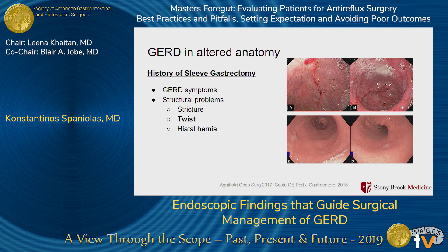A twist of the sleeve — whether anatomic or functional — means that instead of a straight staple line at 9 o'clock on endoscopy, the staple line may fluctuate, going from 12 o'clock to 9 o'clock to 7 o'clock. These patients can have problems not identified without endoscopy, and if there's a structural issue like this, targeted therapies may not adequately address their symptoms.